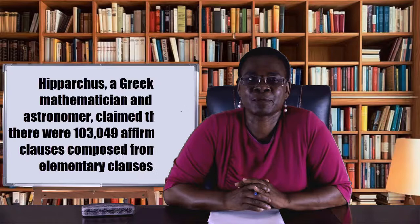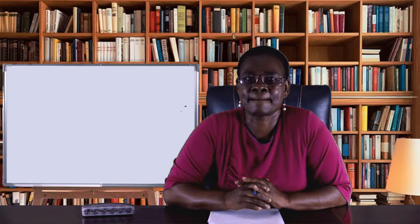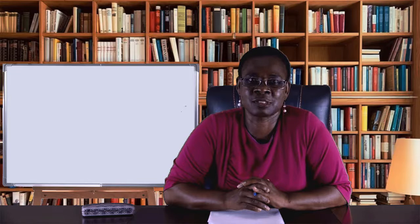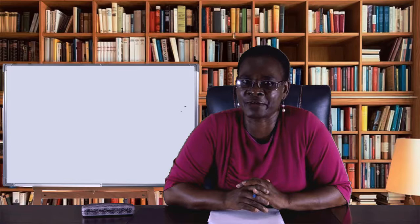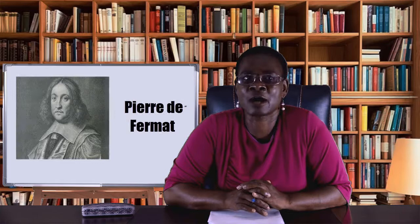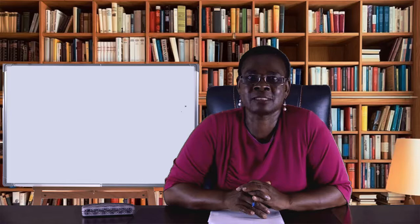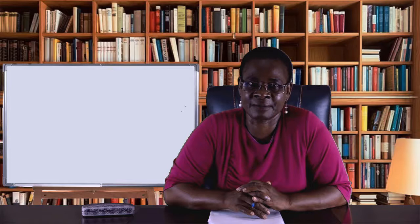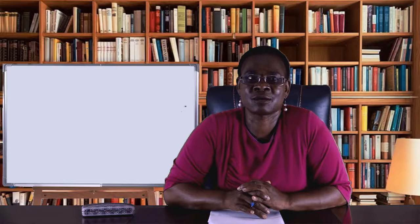In the 2nd century BC, a Greek mathematician and astronomer claimed that there were 103,049 affirmative clauses composed from 10 elementary clauses. The 12th century Indian mathematician Bhaskara determined the binomial coefficients. In the 13th century, the relationship between the number of arrangements and the number of permutations was established. In the 17th century, Blaise Pascal and Pierre de Fermat, by founding the calculus of probabilities, clarified the notions of permutations, arrangements, and combinations. Pascal determined, using his triangle, the binomial coefficients. However, it seems proven that the formula of the binomial was already known to the Arabs in the 13th century and to the Chinese in the 14th century.